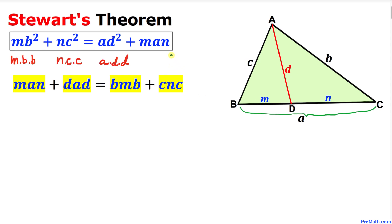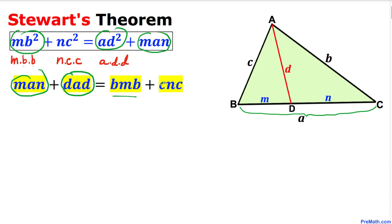Let me show you an easy way to memorize this formula. On the right-hand side we have m·a·n, and ad² can be written as d·a·d — that spells 'dad'. On the left-hand side, m·b² is m·b·b — that's 'bomb' — and n·c² is n·c·c — that's 'sink'. So we remember it as: man plus dad equals bomb plus sink.